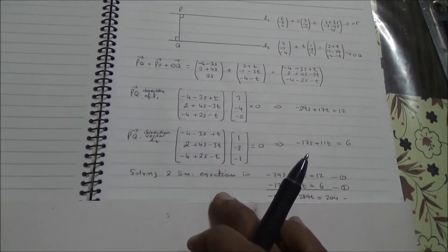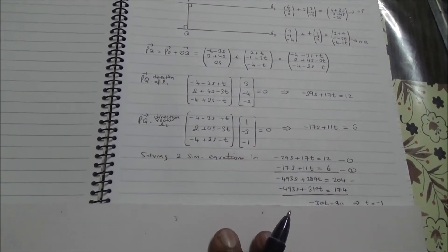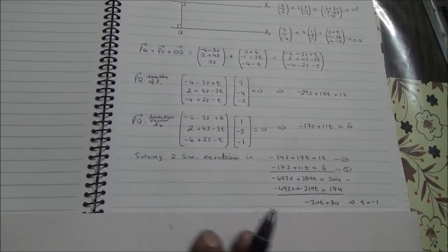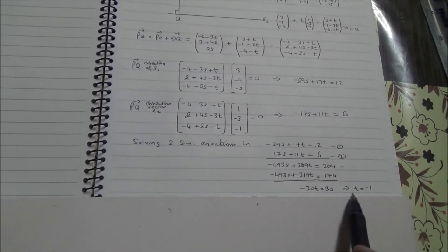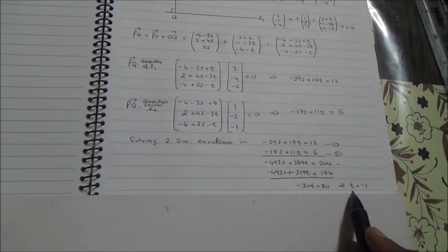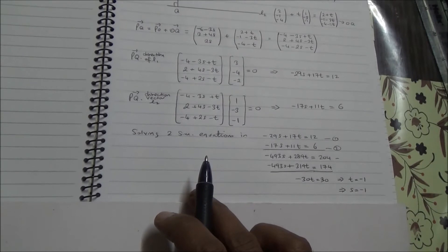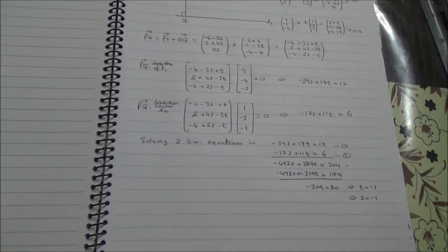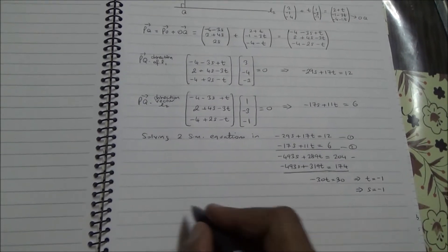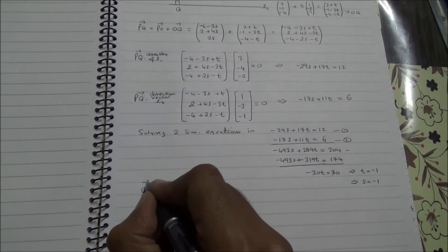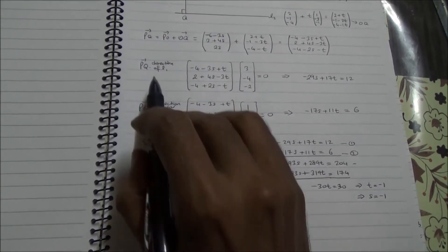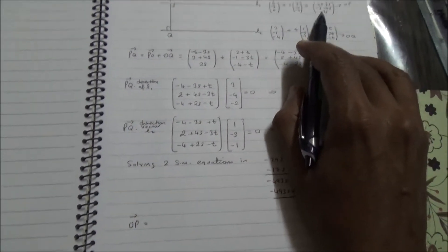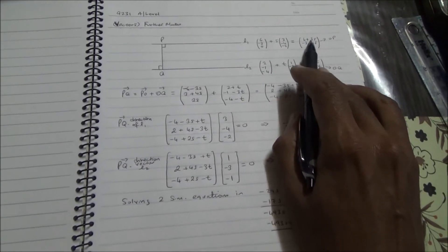Solving these two simultaneous equations is quite straightforward — you've done that at the basic stage in maths. Solving them gives the value of T as minus 1 and the value of S as minus 1. Now from here we need to find the vector OP as required in the question.